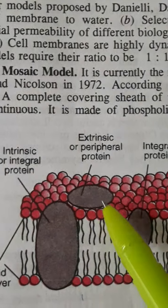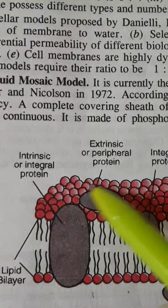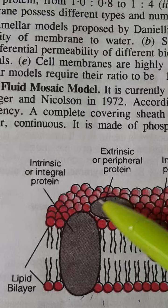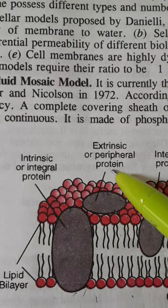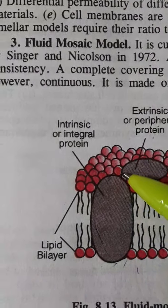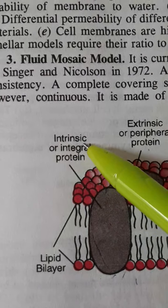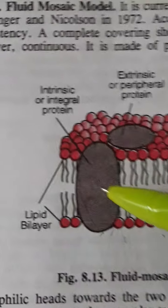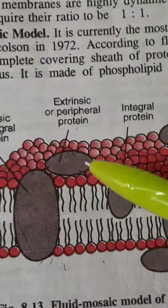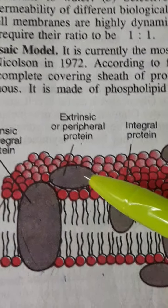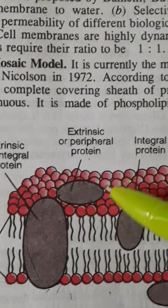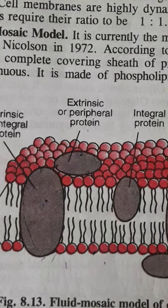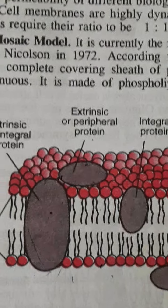In the fluid mosaic model, the phospholipid bilayer has proteins present either on the outer side or the inner side, and some traverse through the lipid bilayer. Proteins present on the outer surface are known as extrinsic or peripheral proteins, while those traversing through or present inside the lipid bilayer are known as intrinsic or integral proteins. These integral proteins are bound by covalent bonds and are very loosely bound, so they can be easily separated when needed.